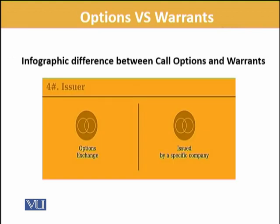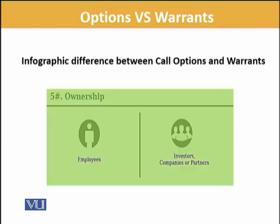In terms of issuer, options are issued by exchanges, whereas warrants are issued by specific companies. Ownership also varies: in options it is generally investors, whereas in warrants it may include employees as well. This is not a very strict hard and fast rule, but this distinction does exist.